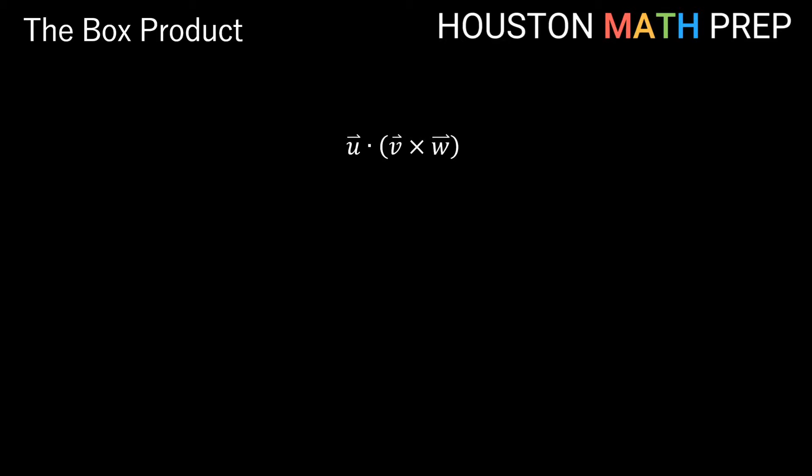Welcome back everyone, Houston Math Prep here. In this video we're going to explore the box product — it's a product involving three vectors. You can see it actually involves two different kinds of products to calculate: we've got both a dot product and a cross product.